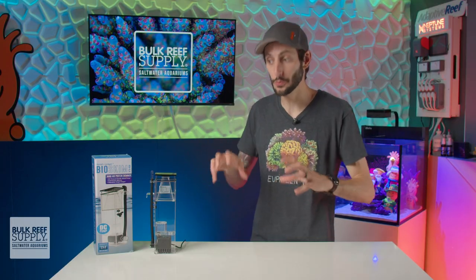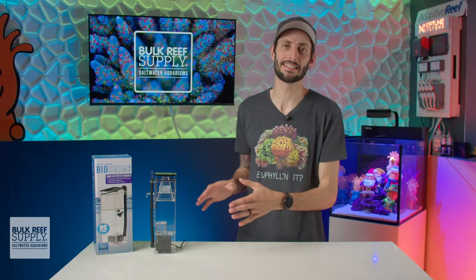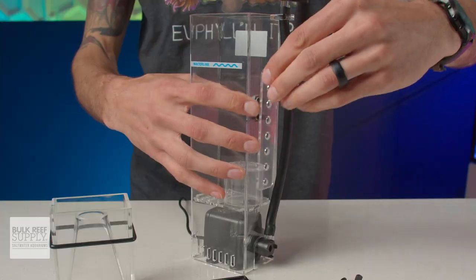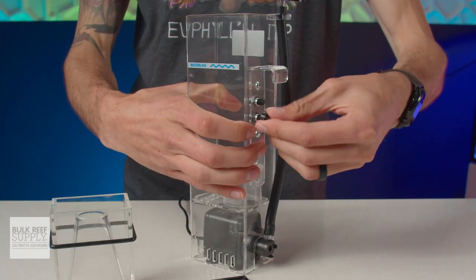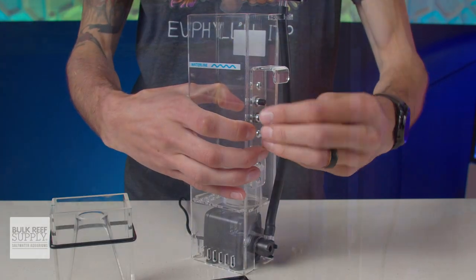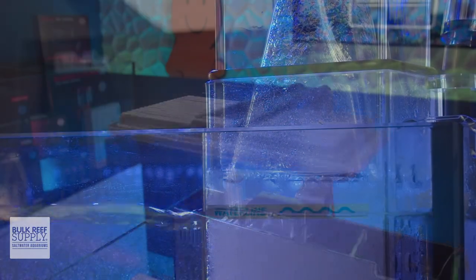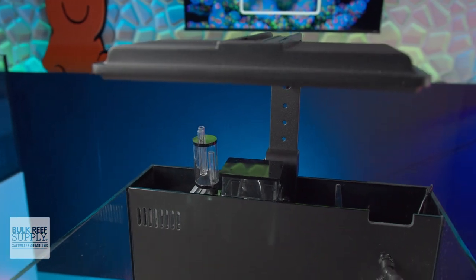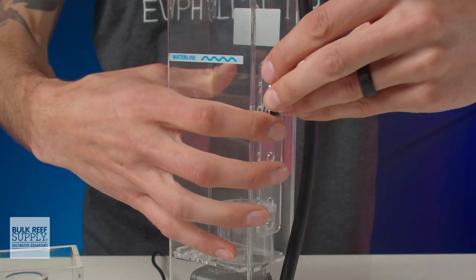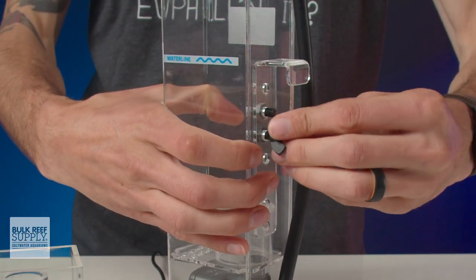When it comes to dialing it in to get a good skim, the BioSkim DC has two points of tuning. First, you can adjust the water depth of the skimmer using the bracket until the waterline matches up with the mark on the skimmer body. And while this will depend to some degree on the depth of the filtration section, you have six positions to raise or lower the skimmer to help roughly dial it in.